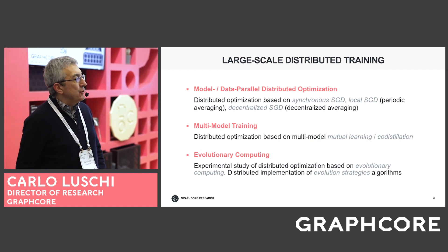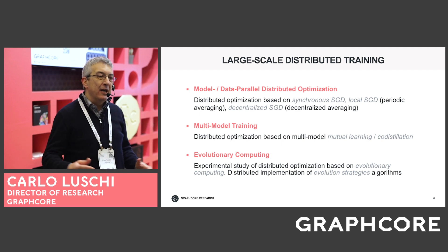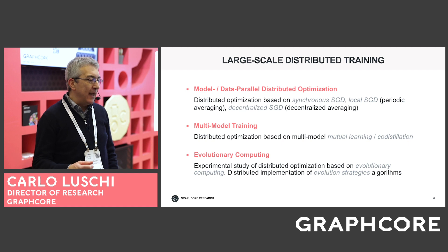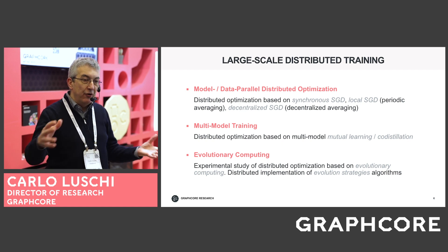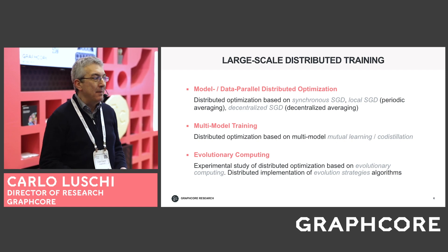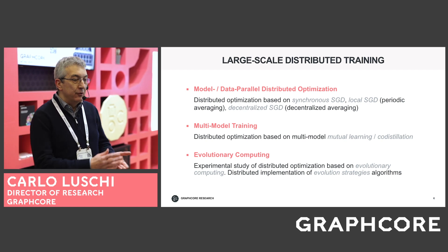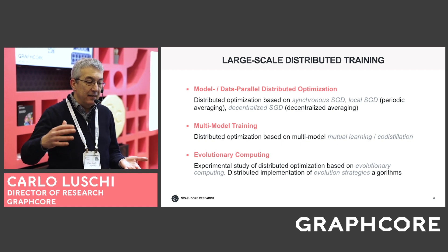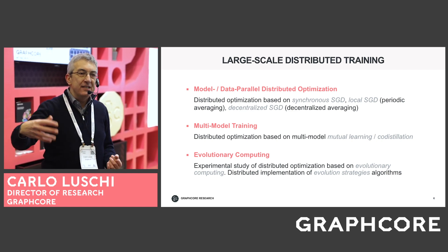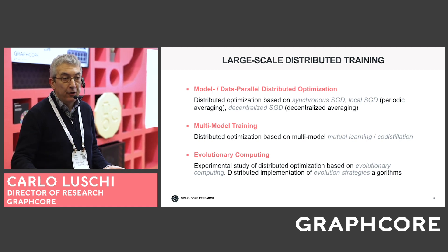On large-scale training, the conventional way of speeding up training over a larger number of parallel processors is normally based on data parallelism. However, increasing the number of workers with data parallelism requires larger and larger batch sizes, which makes SGD and similar optimization algorithms less efficient. At a certain point, increasing the batch size means that adding more workers no longer corresponds to a speed-up in training — there is a saturation region because the algorithm becomes too inefficient.